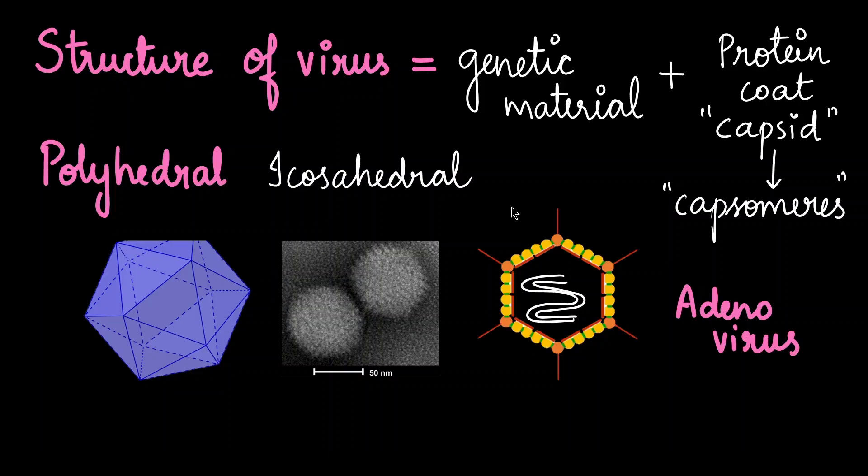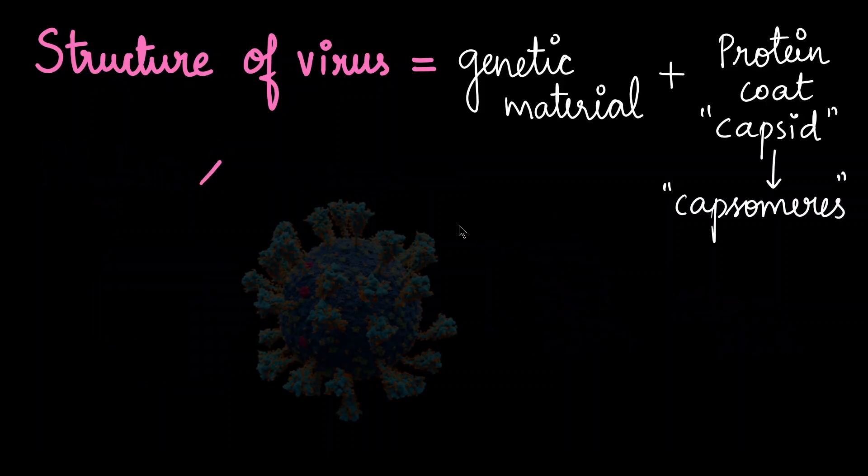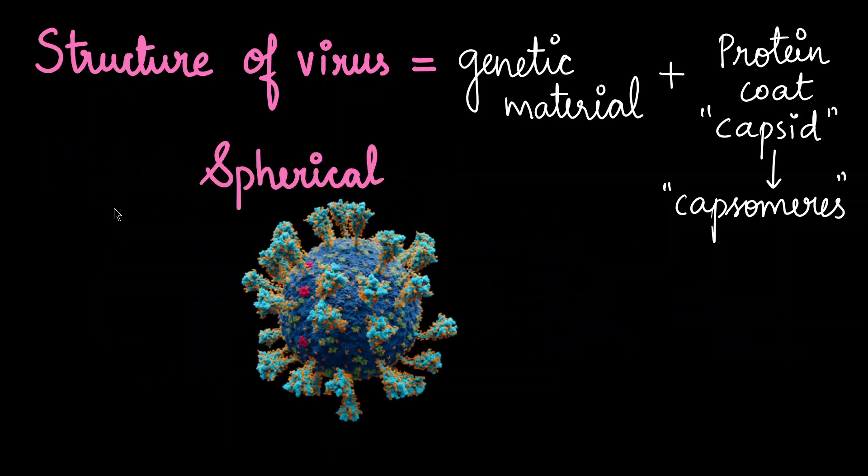Then comes the simple spherical viruses. You have a spherical capsid within which the genetic material is protected. The influenza virus has a spherical shape.